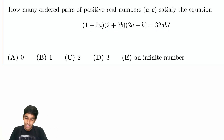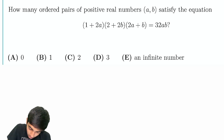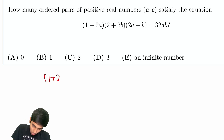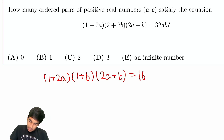Let's divide. In doing so, we get — this is a simple step — (1 + 2a)(1 + b)(2a + b) = 16ab.